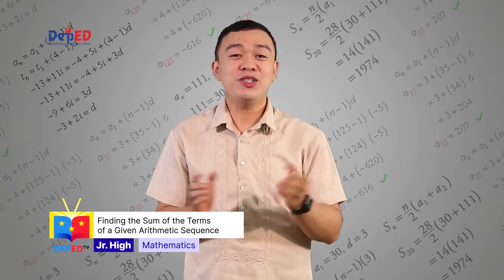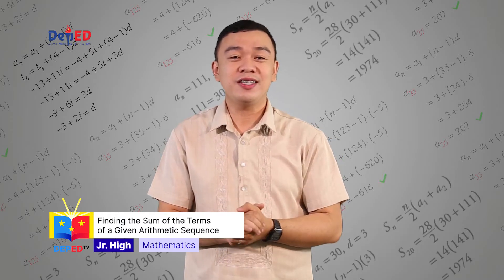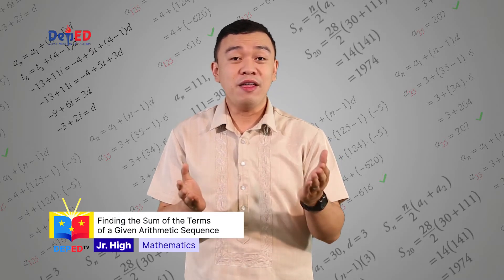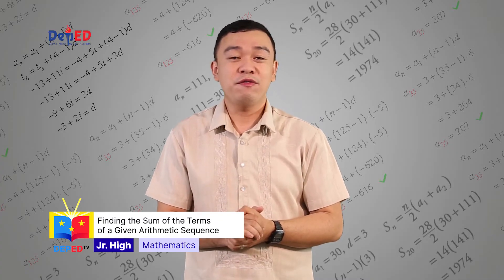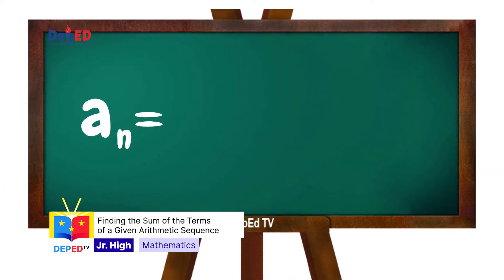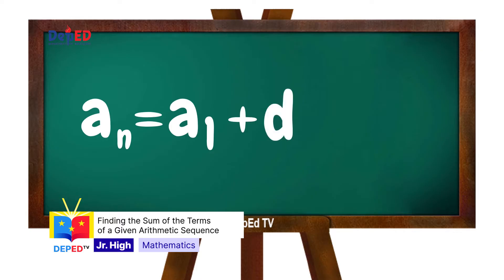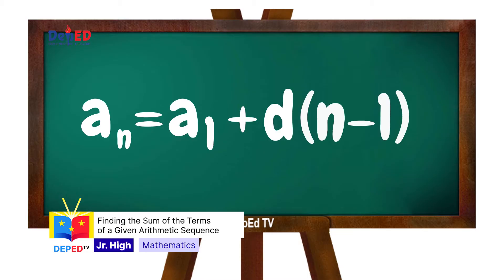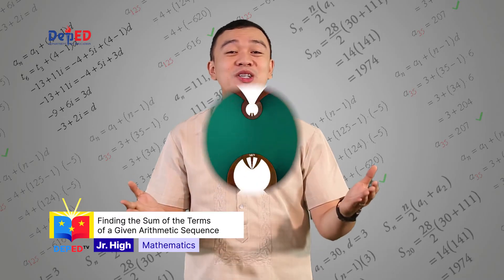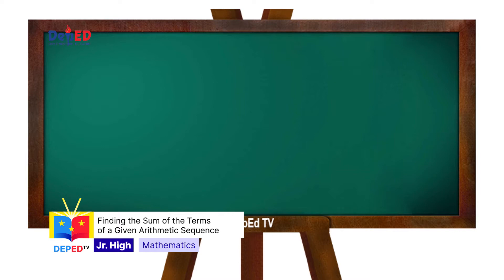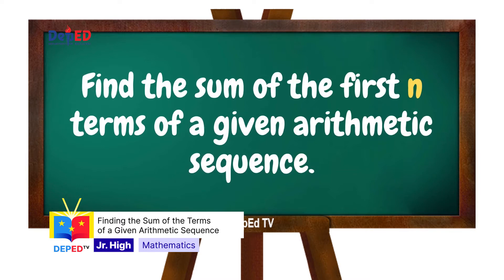In the previous episode, it was discussed that to find the nth term of an arithmetic sequence, the formula a sub n is equal to a sub 1 plus d times (n minus 1) can be used. In this episode, we will discuss how to find the sum of the first n terms of a given arithmetic sequence.